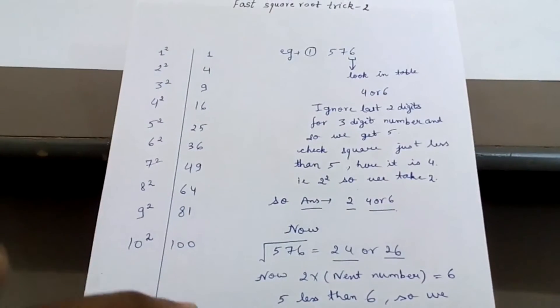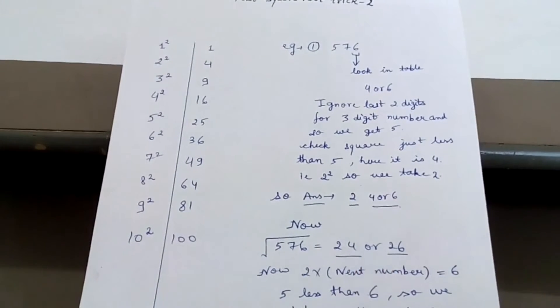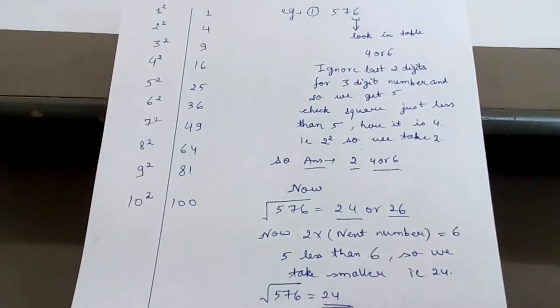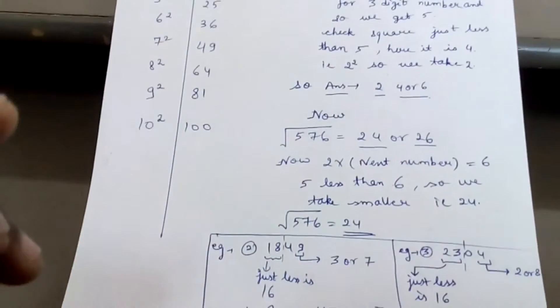So final answer would be square root of 576 is equal to 24. Now let me explain with another example.